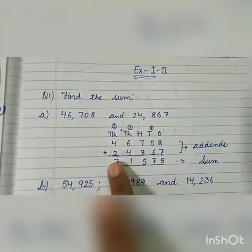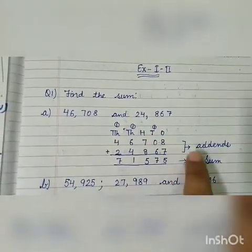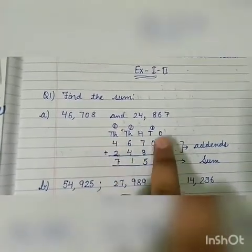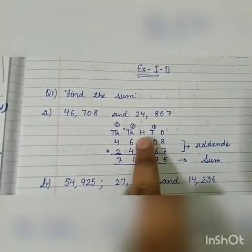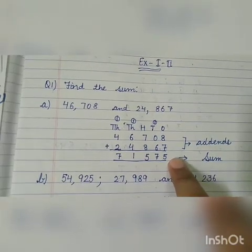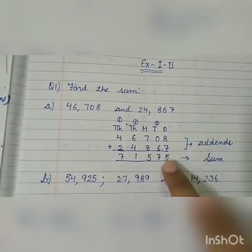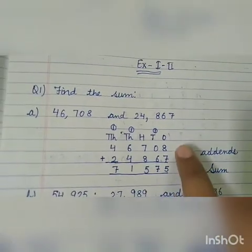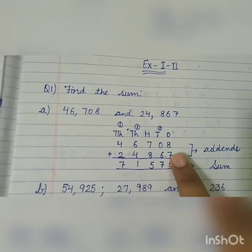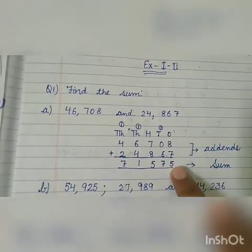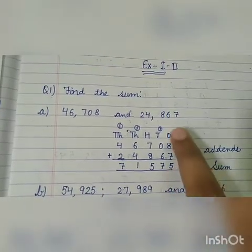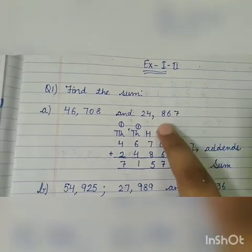Let's see how you will do this sum. First, you have to arrange the numbers according to place values: ones, tens, hundreds, thousands. Then add the numbers from the ones place. First, eight plus seven. You can count these numbers on your fingers. After adding, the answer is fifteen. Write five here, and one carries to the next place.